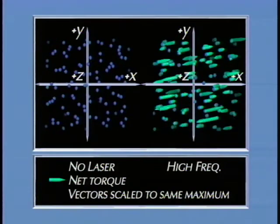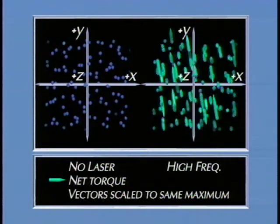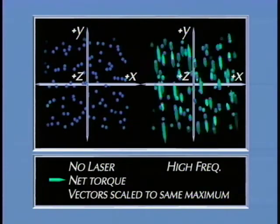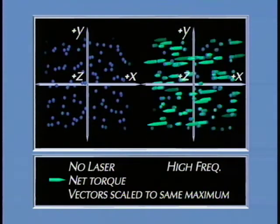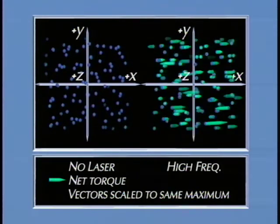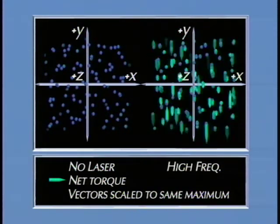In the first example, the vectors in the baseline or no-laser condition are scaled to the same maximum as the high-frequency laser. However, because the absolute magnitude of the vectors is much greater in the laser treatment condition, we must rescale the baseline vectors to make them visible.